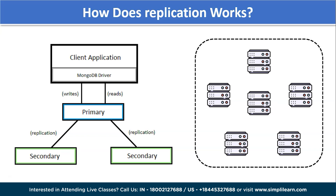Replication is done through a replica set process — in simple words, a group of MongoDB processes that keep the same data across different servers. A replica set must have a certain number of nodes. We need at least one primary server to perform replication, and the rest are secondary nodes. A replica set must have at least three nodes — one primary and the rest secondary. A replication structure can have up to almost 50 nodes.